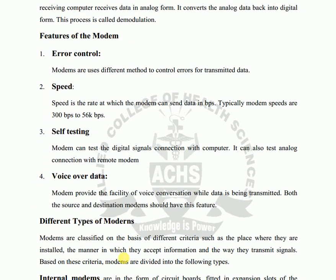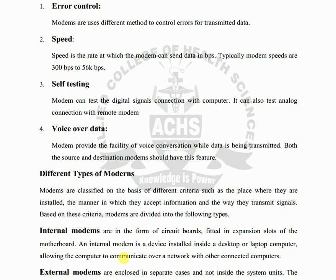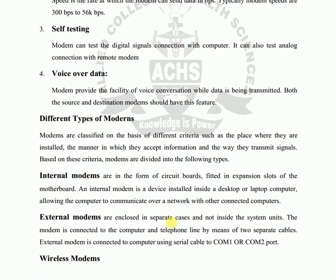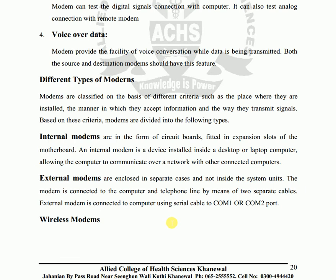Different types of modems: modems are classified on the basis of different criteria such as the places where they are installed, the manner in which they accept information, and the way they transmit signals. Based on these criteria, modems are divided into the following types. First, internal modems: internal modems are in the form of a circuit board fitted in an expansion slot of the motherboard.